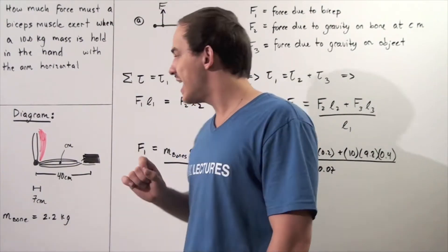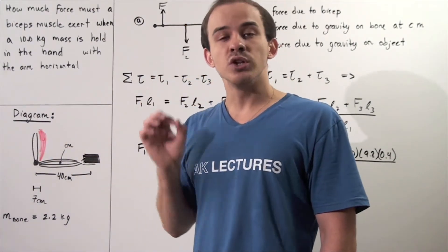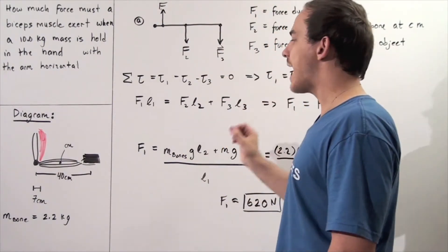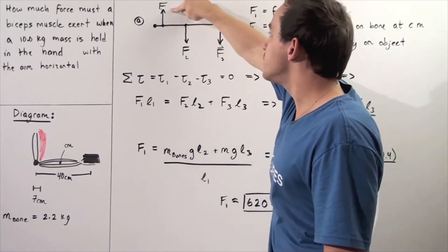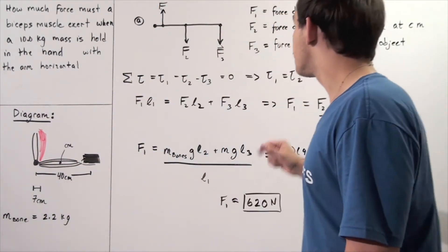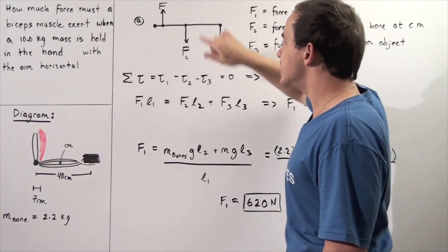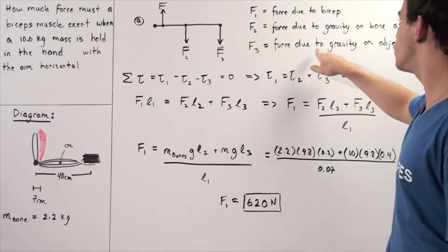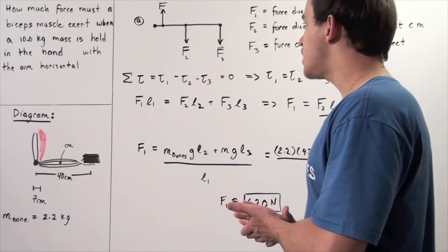Knowing that information, we want to calculate what force the bicep muscle must create so that our entire object is at static equilibrium. We have three forces acting on the bone. Force one, shown here, is the force created by the bicep muscle — this is the force we're looking for — at a distance of 0.07 meters from the axis of rotation. Force two is the force due to gravity acting on the entire bone section at the center of mass, 0.2 meters from the axis of rotation. Force three is the force due to gravity acting on the object, found 0.4 meters from the axis of rotation.